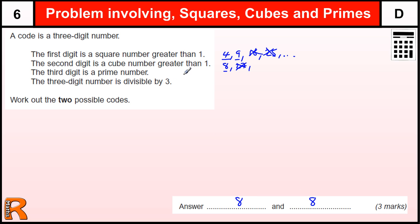The third digit is a prime number. And our prime numbers that are single digits are 2, 3, 5, and 7, not the number 1.